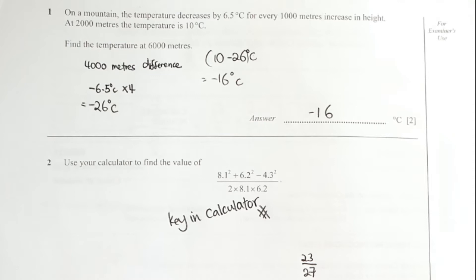Question 2 is pretty straightforward. All you need to do is key in the entire thing into the calculator, then you should get the answer as 23 over 27.